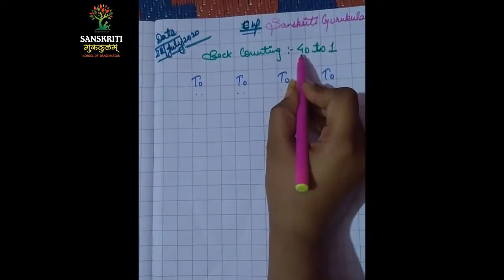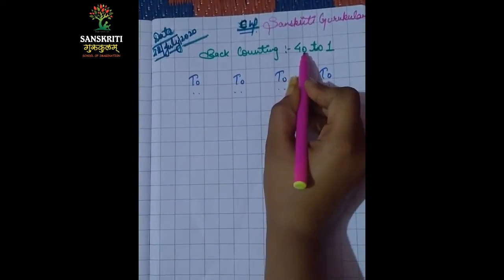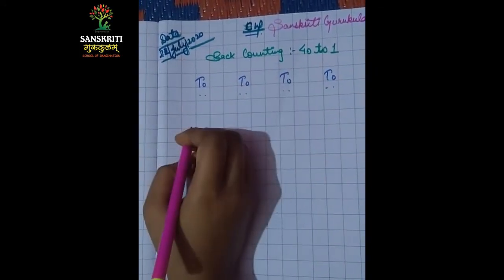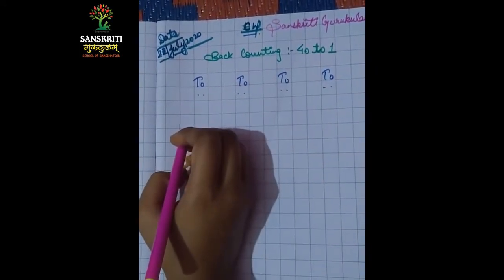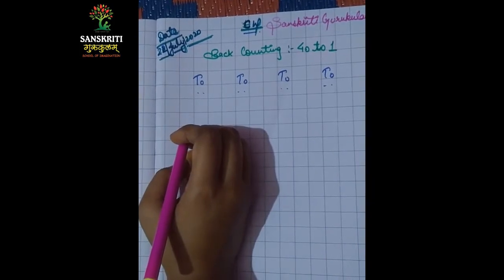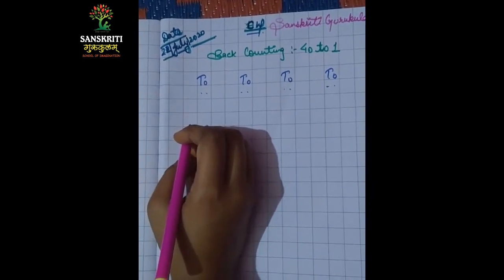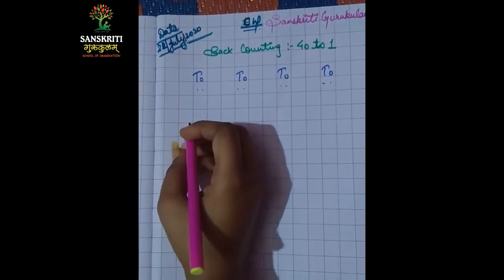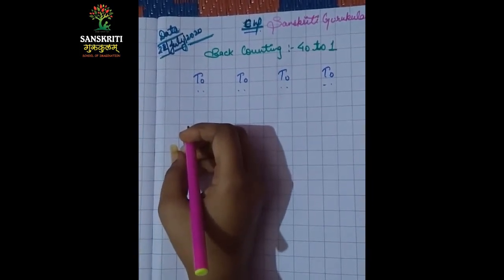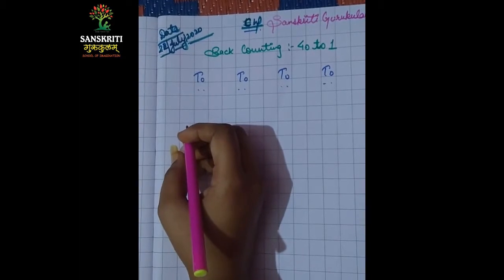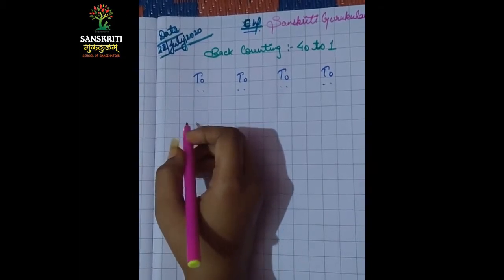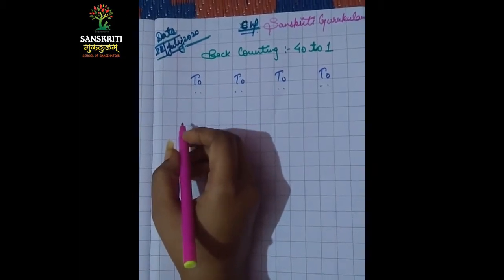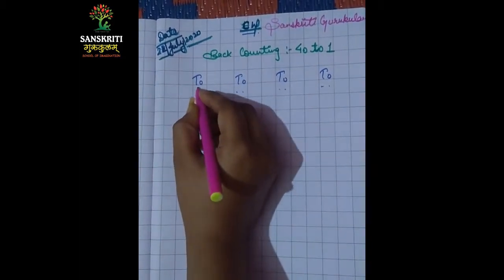Where do we start? From 40. I have told you last video that we are going to go back counting — we are going to go to the right counting. Back counting we are going to go back to the right counting. So we have to start from 40.